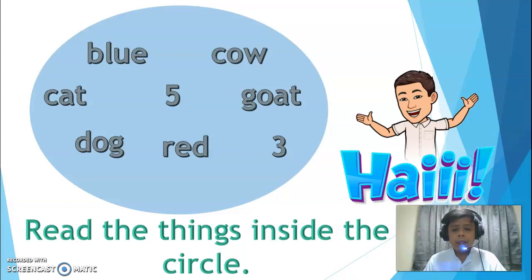Before we start with our formal lesson, I have here an activity. So I have a big circle with words written on it. You have blue, cow, cat, five, goat, dog, red, and then you have three. So what I want you to do is to draw three circles in your graphing notebook and then group the words. You can pause this video.